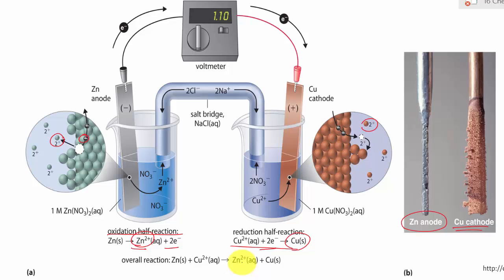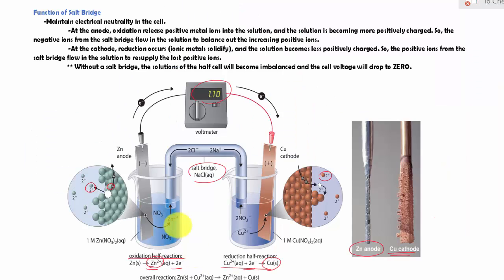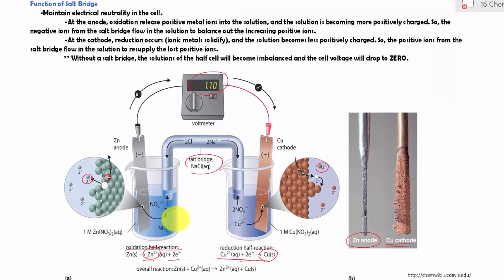In this lesson, we are talking about the function of the salt bridge and how it is related to the voltage that is being measured in the half cells. So what is a salt bridge? A salt bridge consists of an ionic compound made of salt. In this case, the salt bridge is made of sodium chloride — an ionic compound that consists of a positive ion and a negative ion.